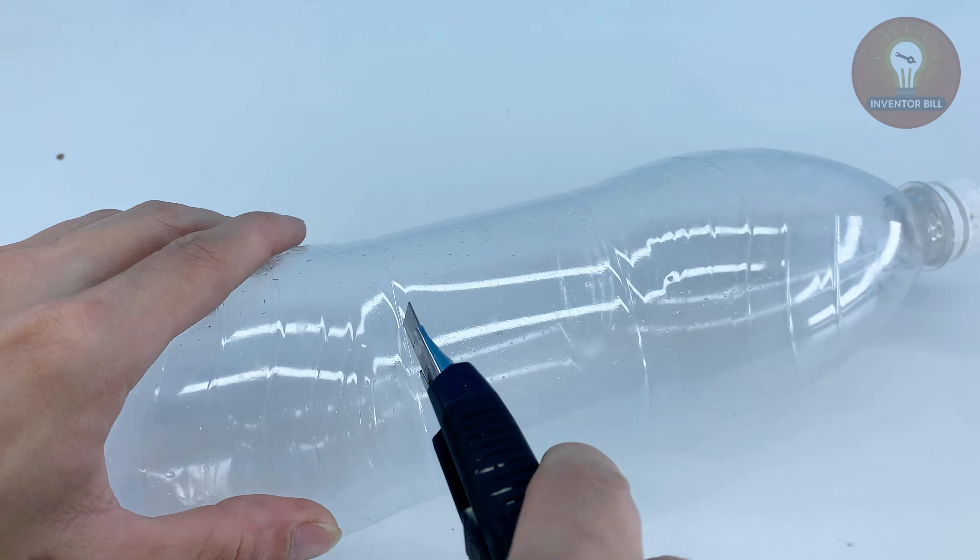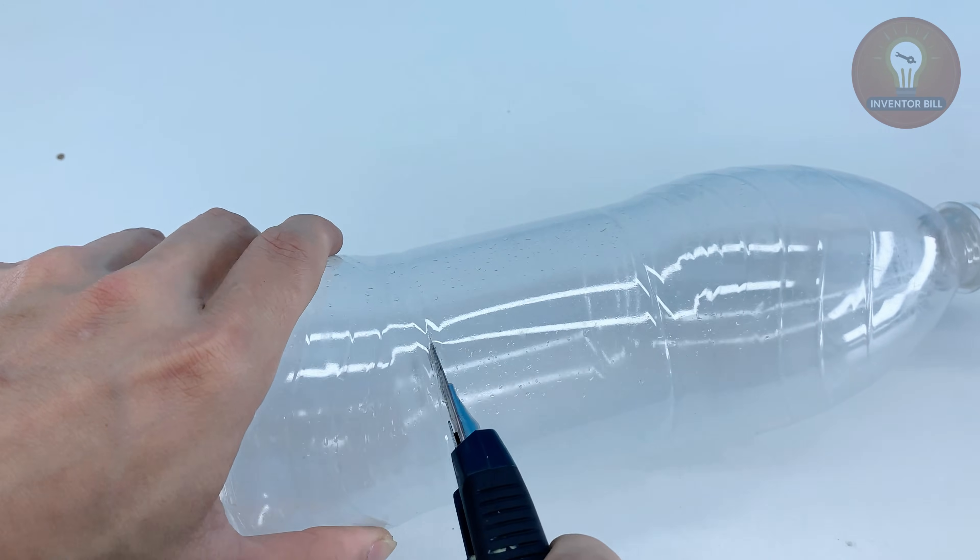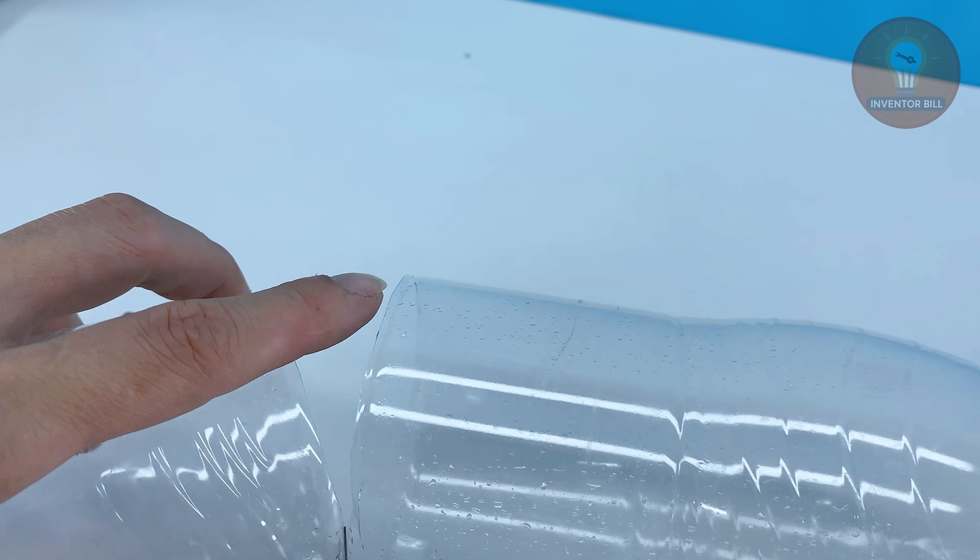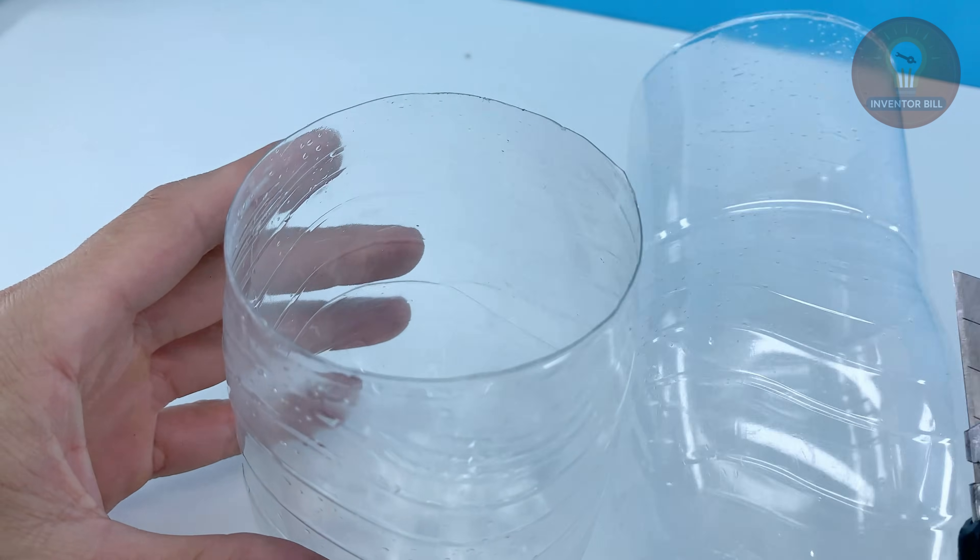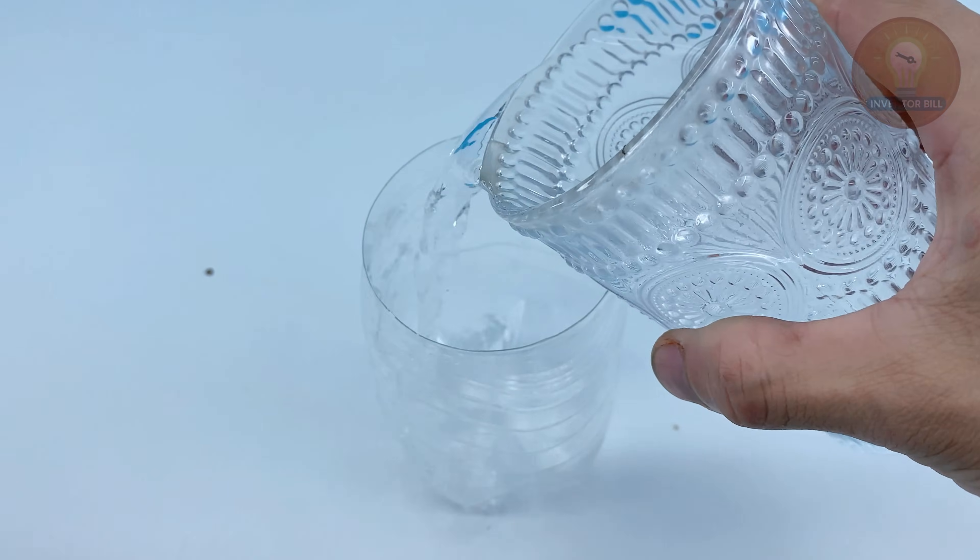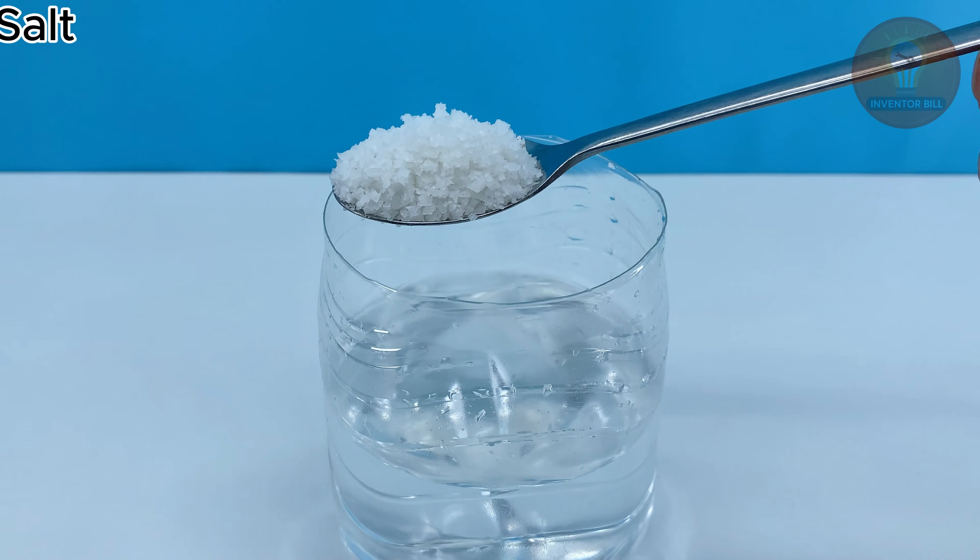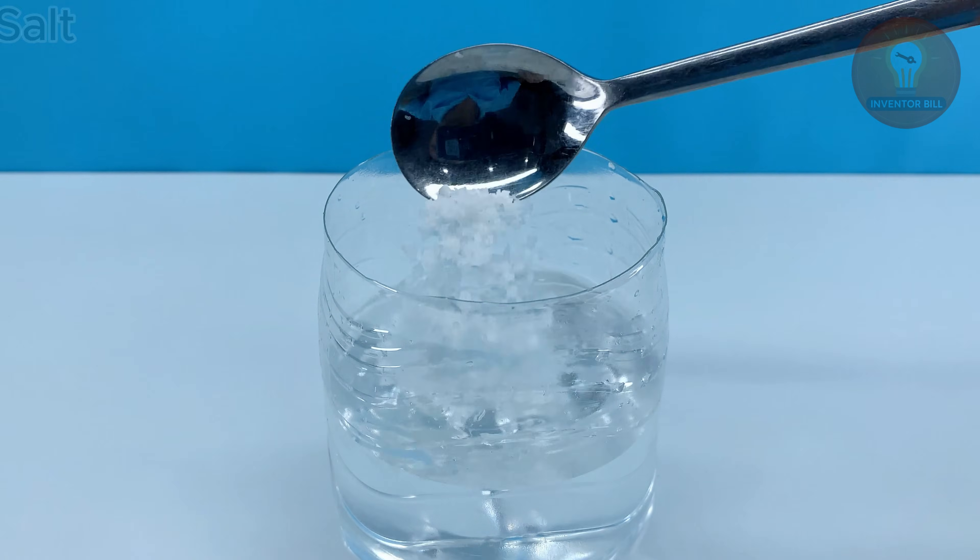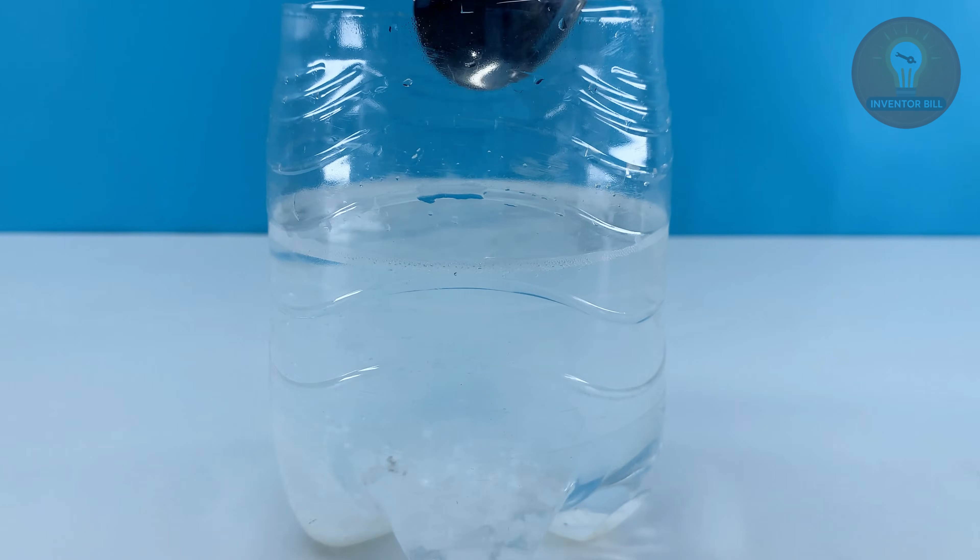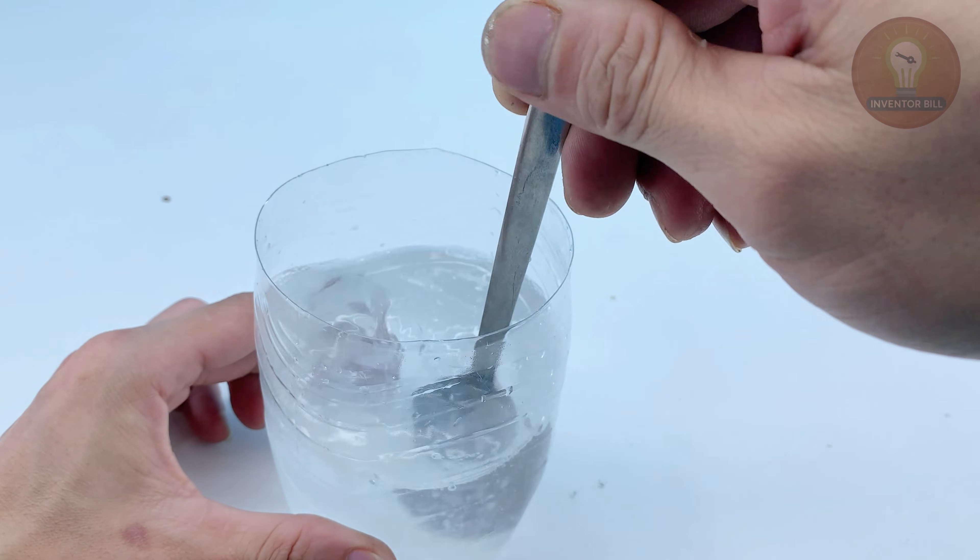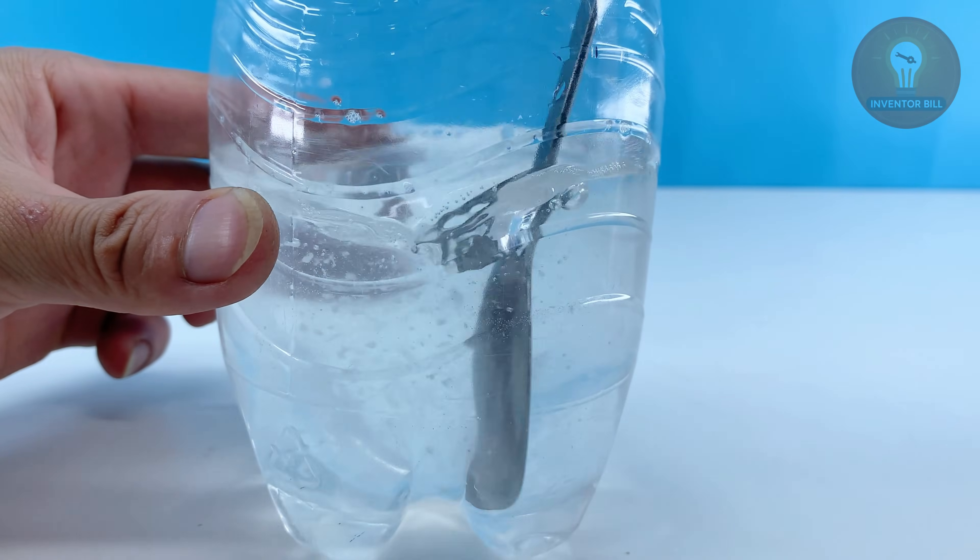Let's start by making a simple cleaning setup. Grab an empty plastic bottle and cut off the bottom, this will be our cup. Pour in some clean water, then add about a tablespoon of regular table salt. Stir it well until the salt fully dissolves. This salty water will act as our cleaning solution.